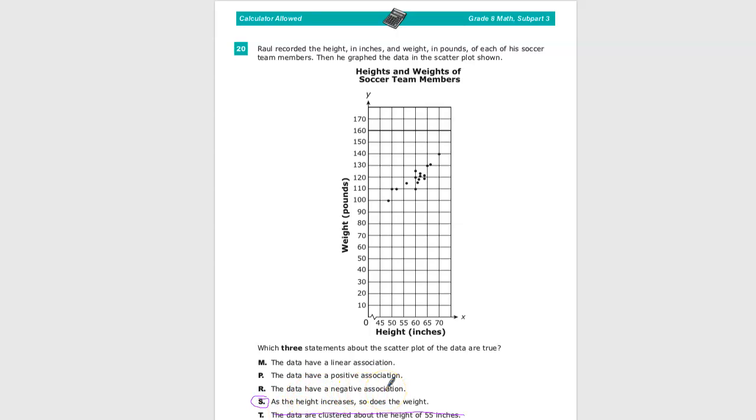The data has a negative association. No. Negative association, again, would mean as one goes up, the other goes down. But height increases as does weight. So they're both going up. So that's out.